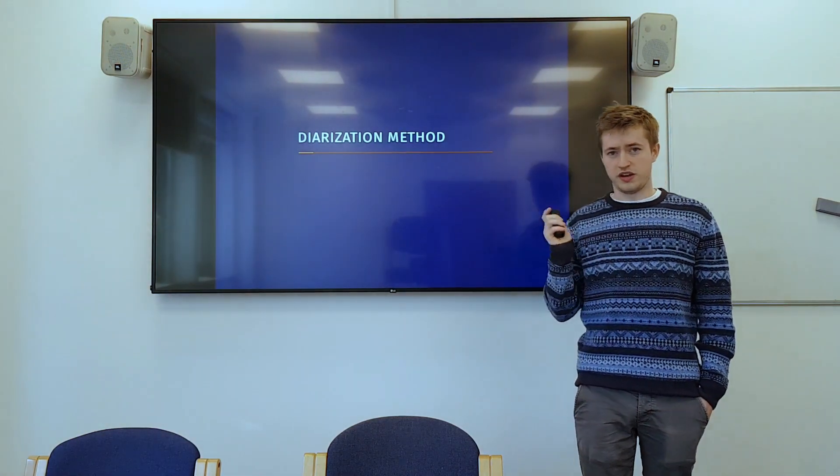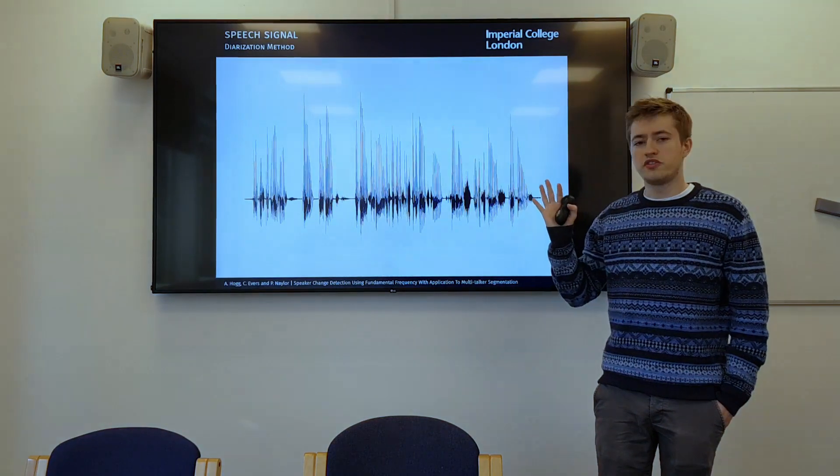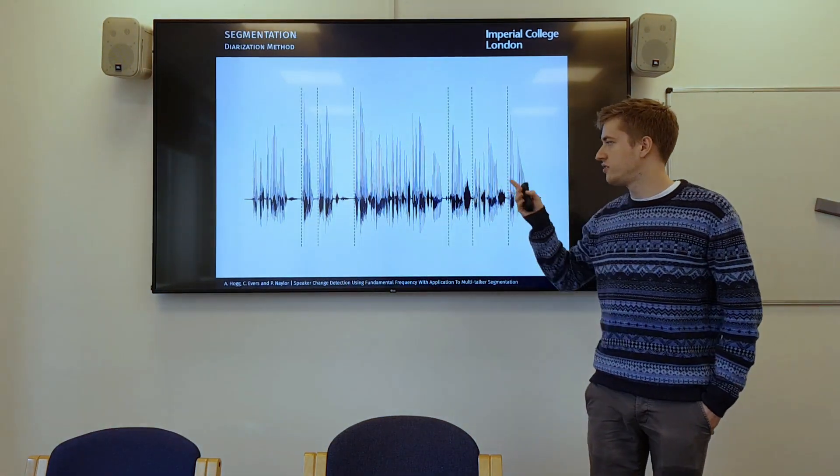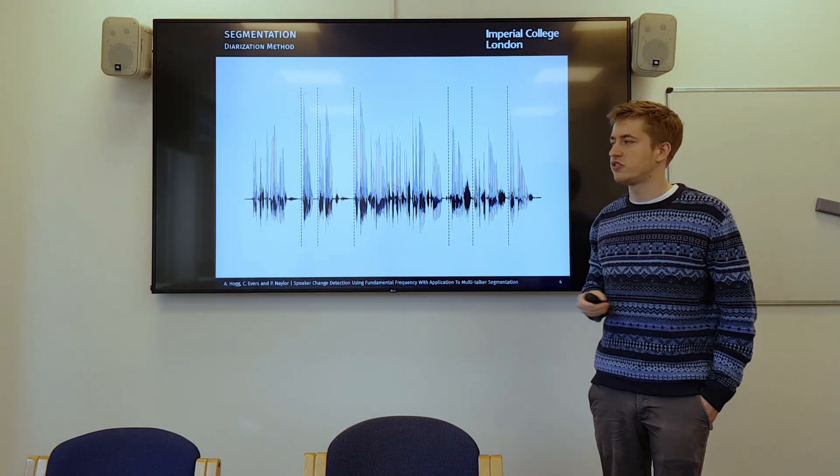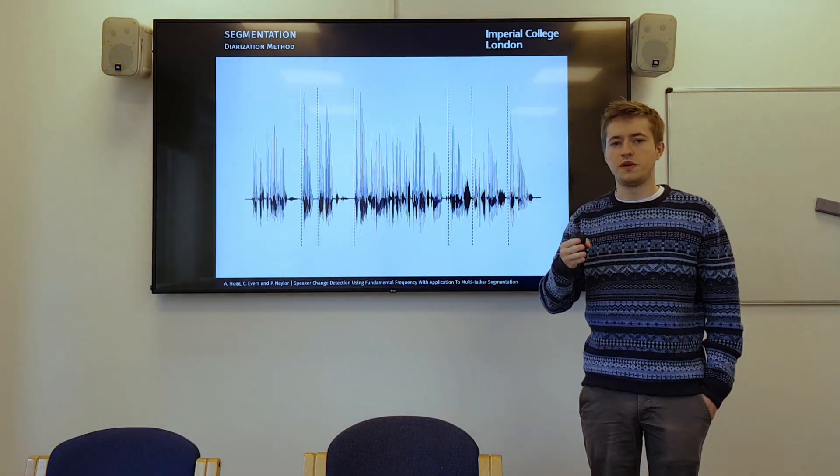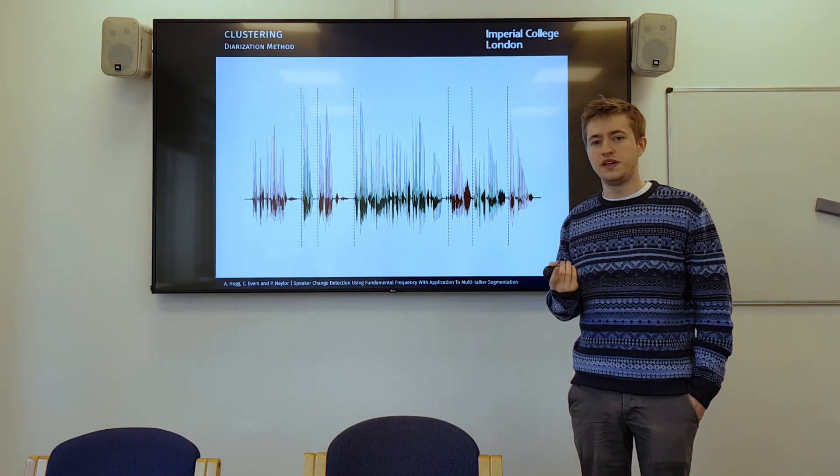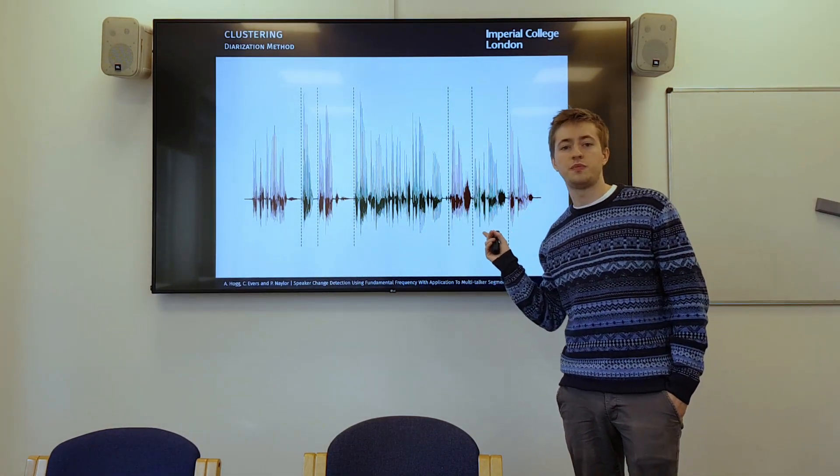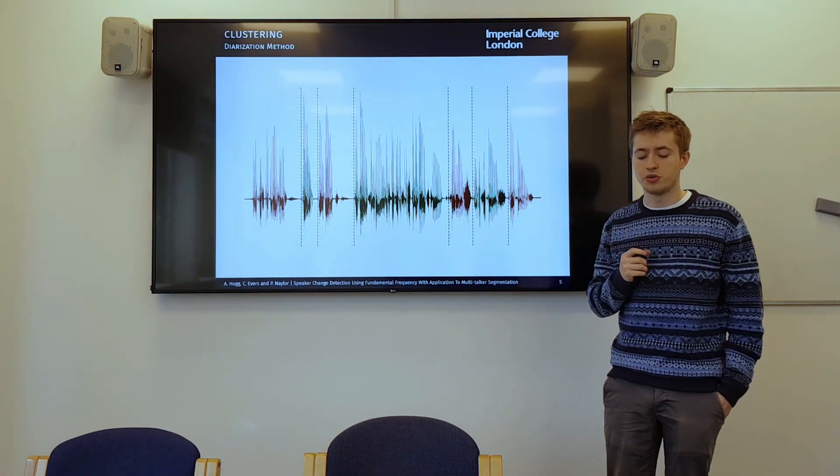So what is the actual method and how do diarization systems normally work? We take a speech signal, we would then segment it. That's represented by these vertical bars, these dashed lines. That's when one speaker stops talking and a new speaker starts. And then you would cluster the speakers. So you can see here I put one speaker in red and one speaker in green. And those are the two speakers in the recording.